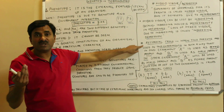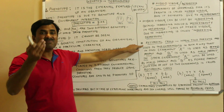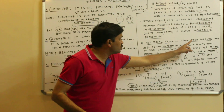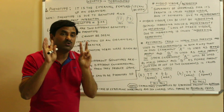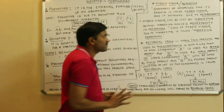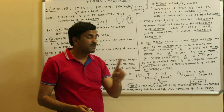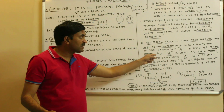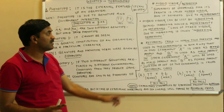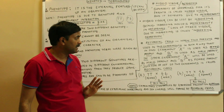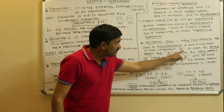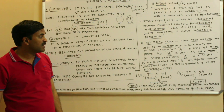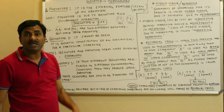We talk about many crosses in genetics — monohybrid, dihybrid, trihybrid — but many people are not aware of the reciprocal cross. Imagine two experiments with two parents: in experiment one, A is used as the female parent and B as the male parent. In experiment two, A is now used as male and B as female. This set of two experiments is called a reciprocal cross.